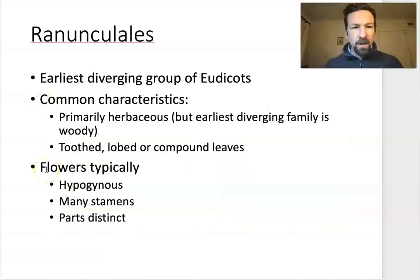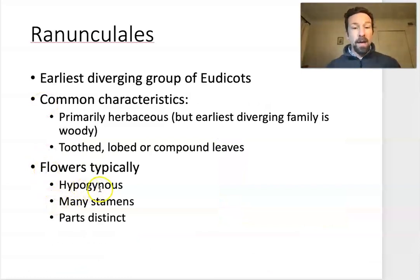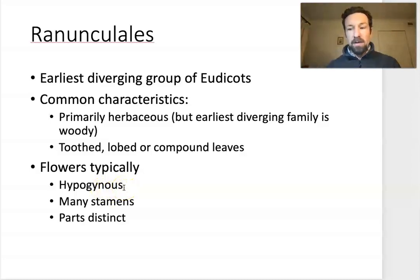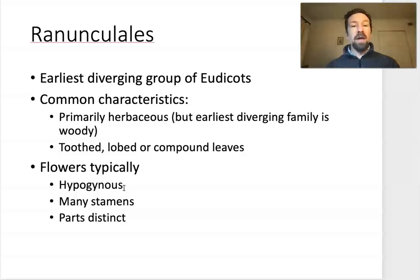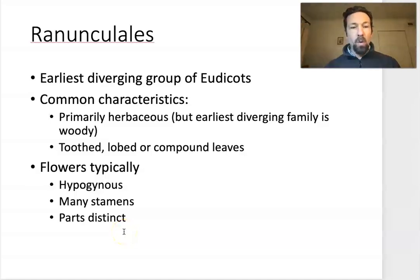Let's talk a little bit about flowers in this order. The flowers are typically hypogynous, meaning that all of the other flower parts, like petals and stamens, are diverging from the flower beneath the carpel. The carpel then has a superior ovary. They typically have many stamens per flower, and the parts are typically distinct, so there's not either connation or adnation of flower parts.